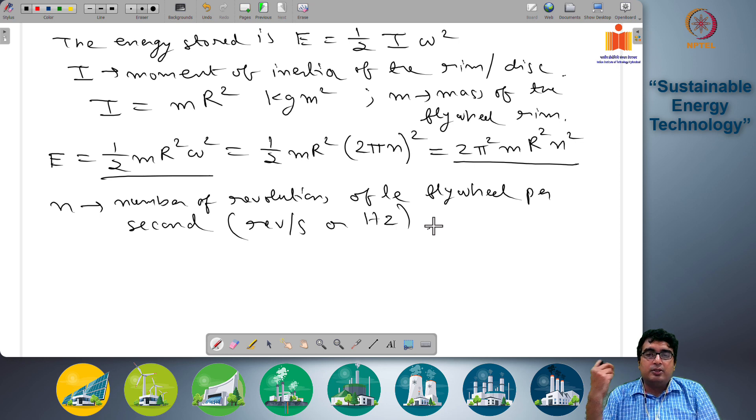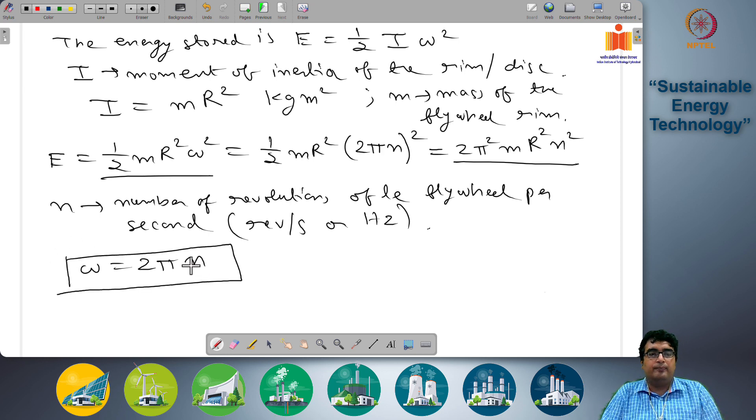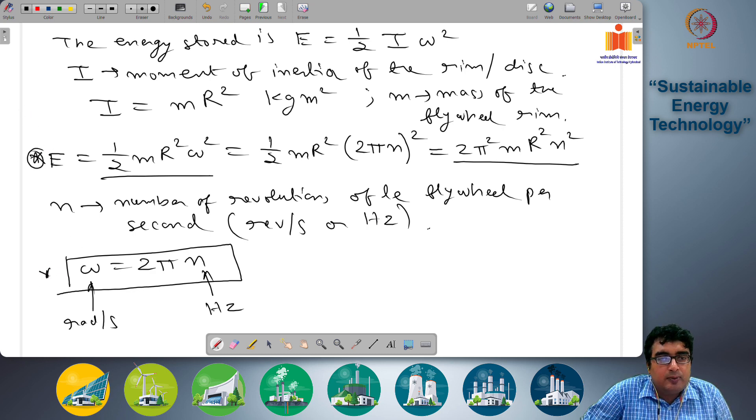One revolution is 2 pi radians. So 2 pi n radians per second. This is radians per second and this is hertz or revolutions per second. So you are putting this 2 pi n here, so you are getting 2 pi square m r square n square. This is the net rotational energy associated with the flywheel. Another important point here, this equation is important.